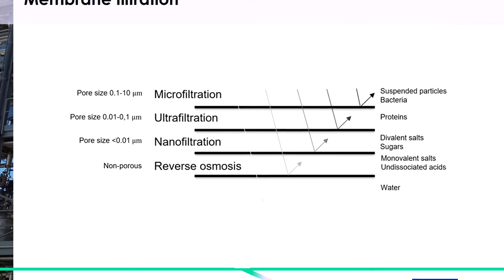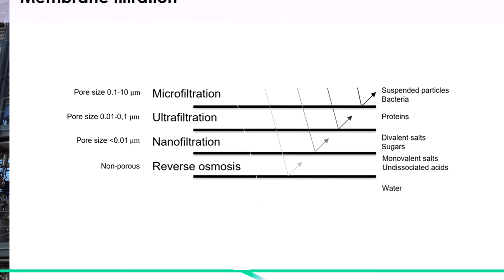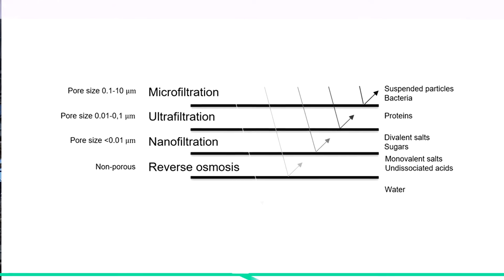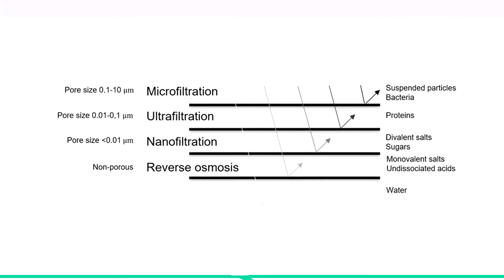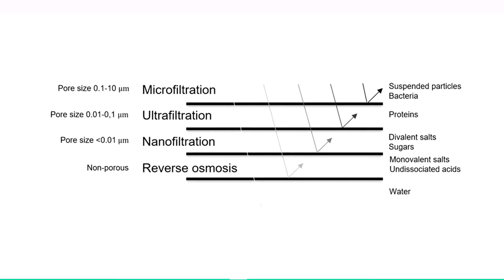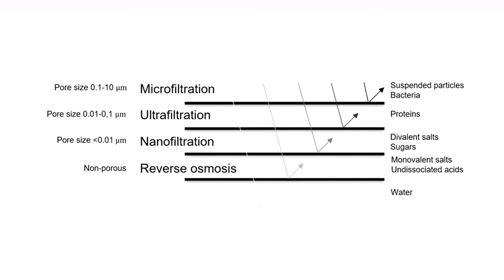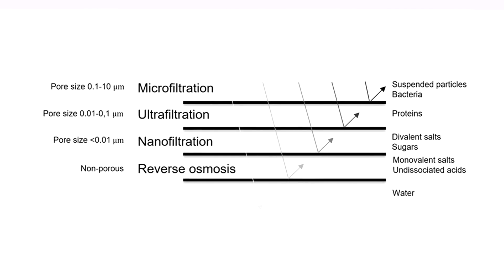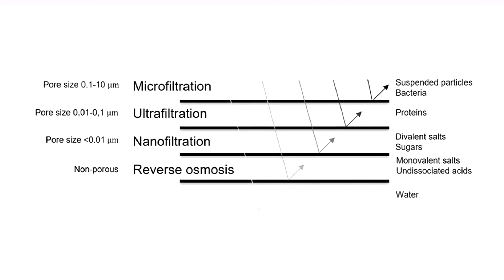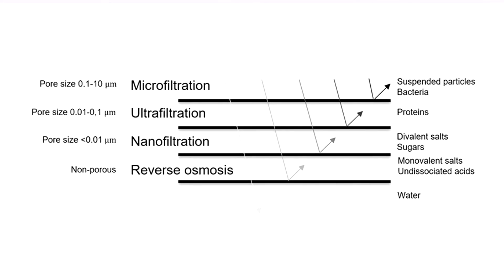Examples of typical retained solutes for each type of membrane are suspended particles in microfiltration, proteins in ultrafiltration, sugars in nanofiltration, and dissolved table salt in reverse osmosis.